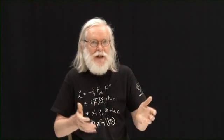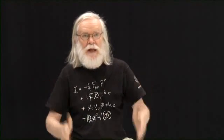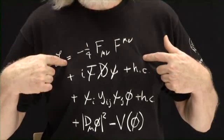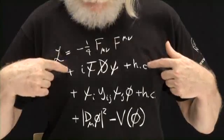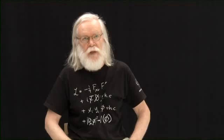Electrons are lighter than muons. The top quark is much heavier than the quarks that make up everyday nuclei. So the top two lines, the symmetric lines, cannot be all there is. There has to be something to discriminate and distinguish between the different types of particle.